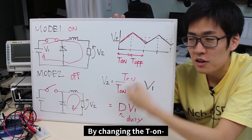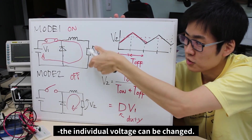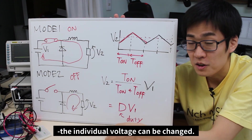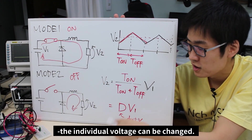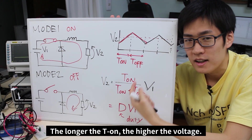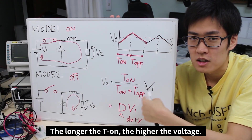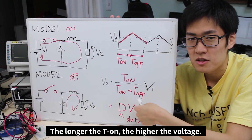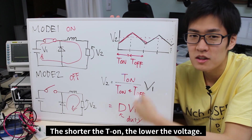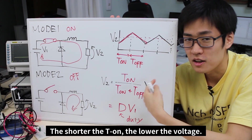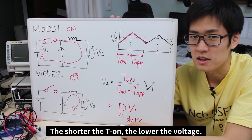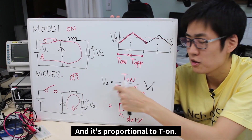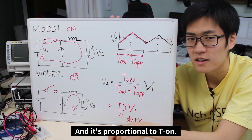By changing the T on, you can change the output voltage. The longer the T on, the higher the voltage, and the shorter the T on, the lower the voltage. All of it is proportional to T on.